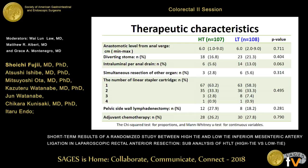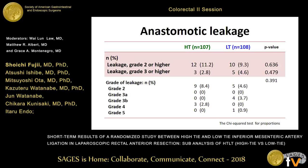Anastomotic distance from the anal verge was six centimeters in both groups, and there were no significant differences in therapeutic characteristics. This is a key slide. The incidence of grade 2 or higher anastomotic leakage was 11.2% in the high-tie group and 9.3% in the low-tie group. Grade 3 or higher was 2.8% in high-tie and 4.6% in low-tie. There were no significant differences in anastomotic leakage.